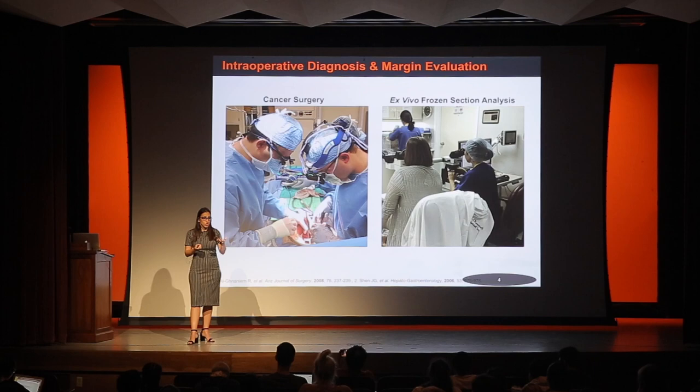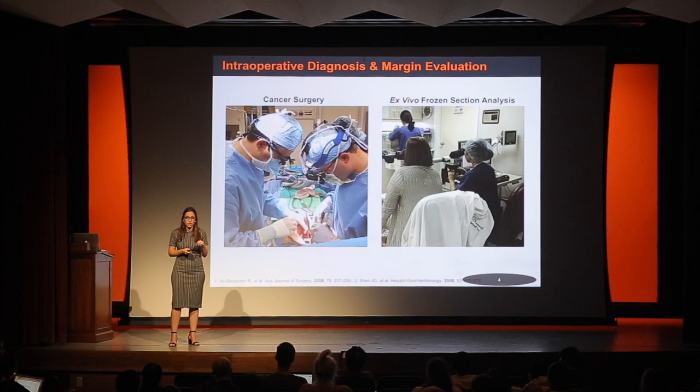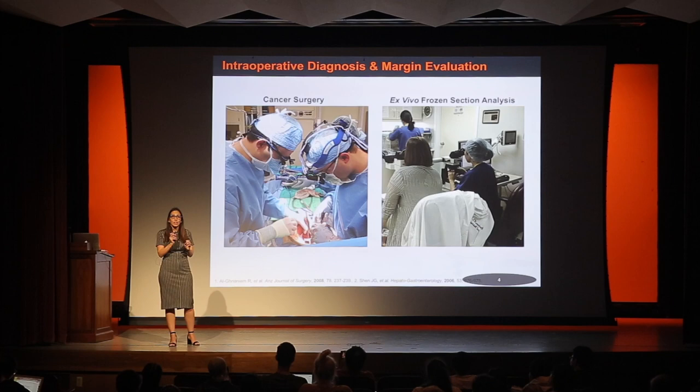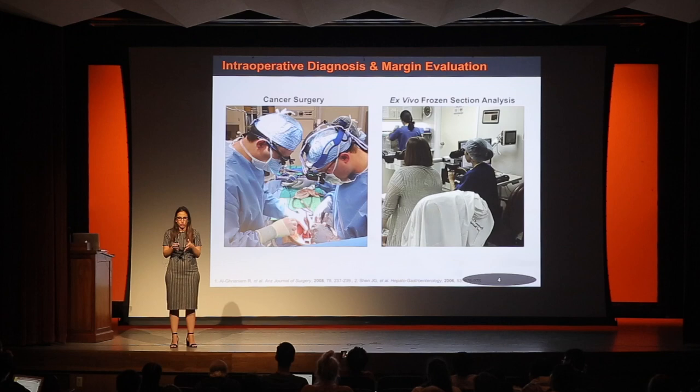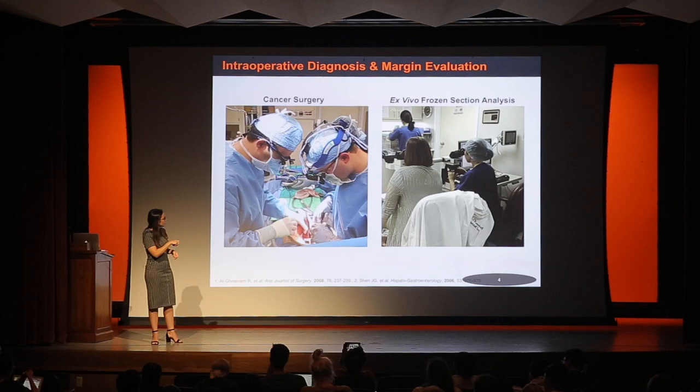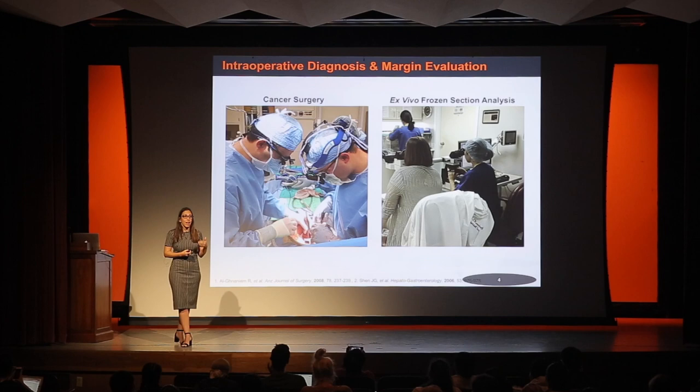Even for really well-trained surgeons — and surgeons are incredibly smart, well-trained people — it can be very difficult to identify just by gross anatomy, just looking at the tissue while doing the procedure, where the delicate boundary is between cancer tissue and normal tissue. It's such a hard thing to recognize that most surgeons end up using what we call frozen section evaluation in order to verify that they've removed all the cancer during surgery.